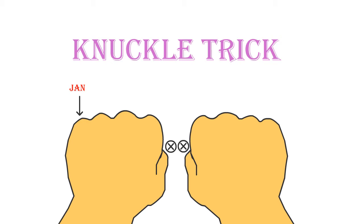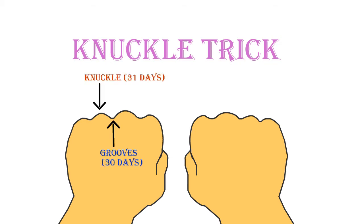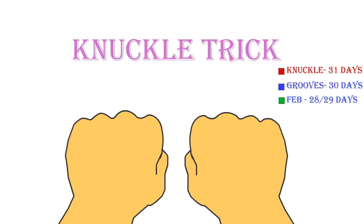Don't count your thumb's knuckles or any space between your hands. Count knuckles as 31 days, depressions between knuckles as 30. Remember the one exception — February — that falls on a groove. It has 28 days, or 29 in a leap year. Begin on the left.